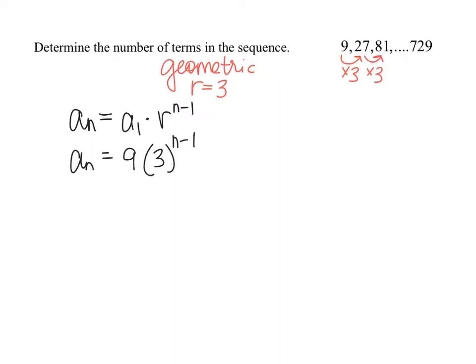In this case we're trying to find the number of terms in the sequence. So what that really means is we are trying to solve for n. n represents the number of terms, but we are given the last term in the sequence which is 729. So we can substitute 729 in for a sub n, the last term of the sequence, and then just solve for n.